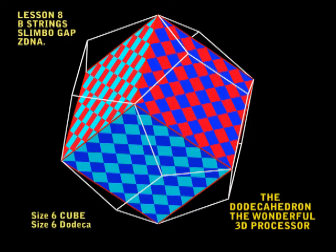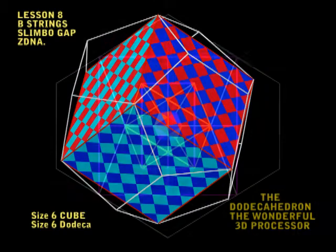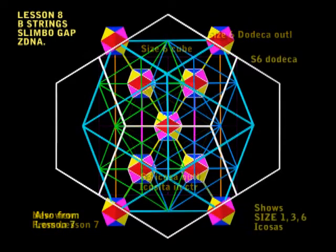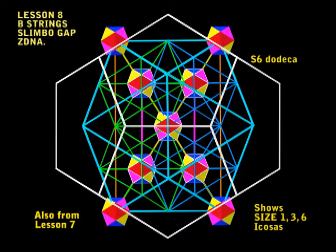In my last video, lesson 7, we showed the size 6 icosa and we showed the Gauguin ratio rectangle. We also showed that 5 icositas would fit perfectly along the diagonals of the rectangle.